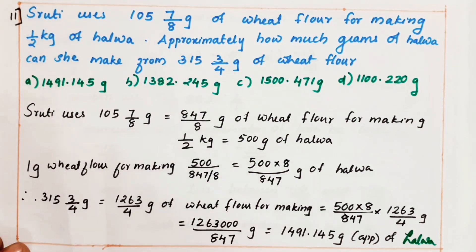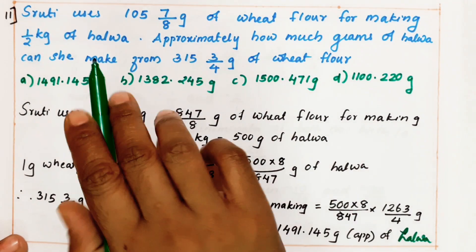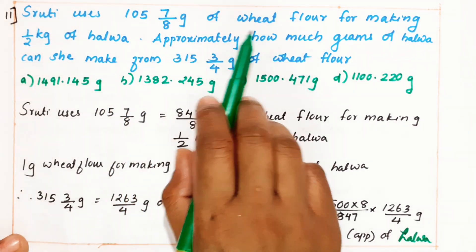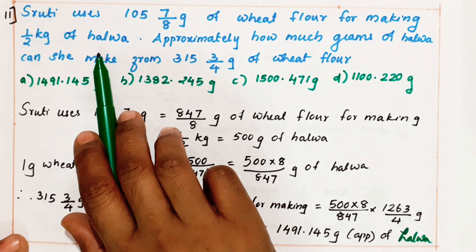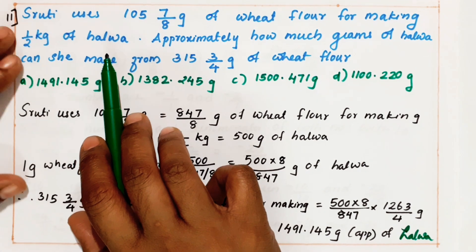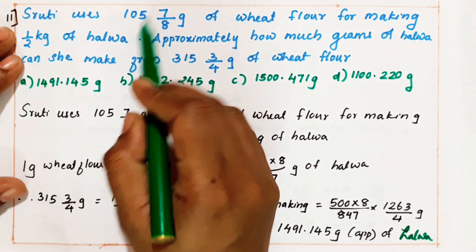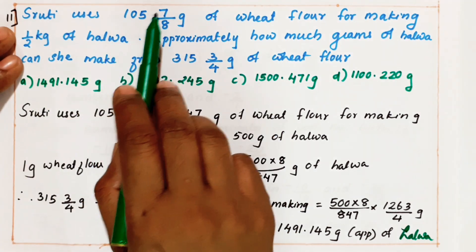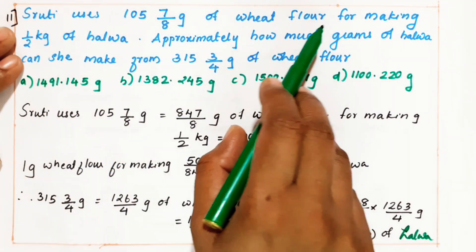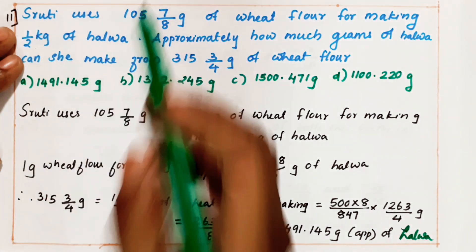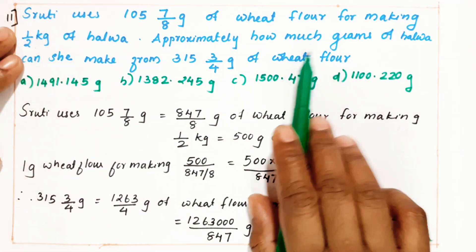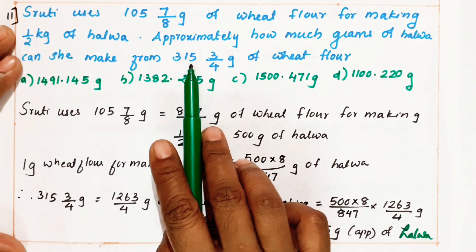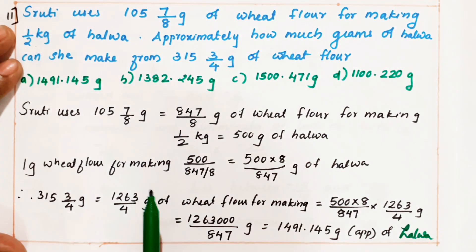See question number 11. Shruti uses 105 and 7/8 grams of wheat flour for making half kg of halwa. So they are given 105 7/8 as a mixed fraction — 105 7/8 grams of wheat flour for making half kg of halwa.